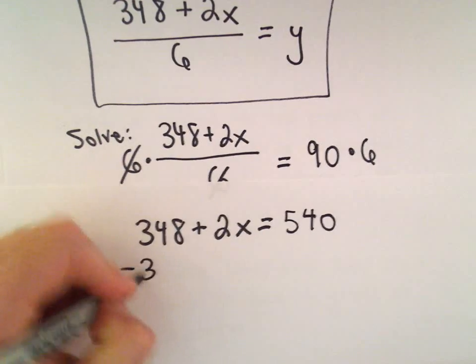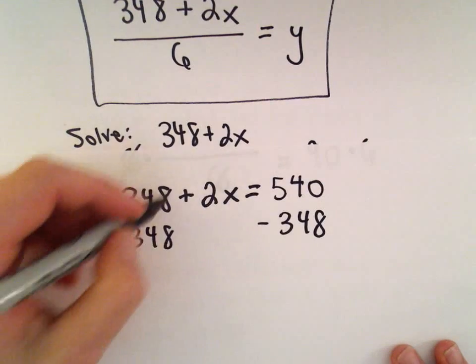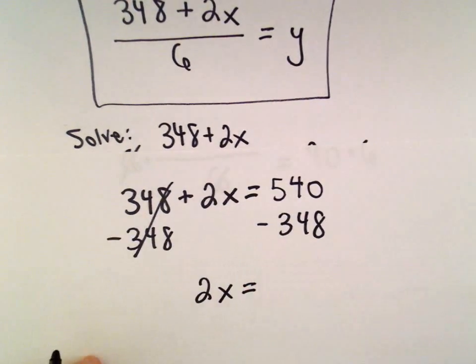Next I'm going to subtract 348 from both sides, so on the left side we'll just be left with 2x. Let's see, 540 minus 348, that's just going to be 192.